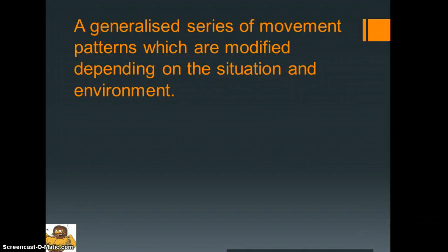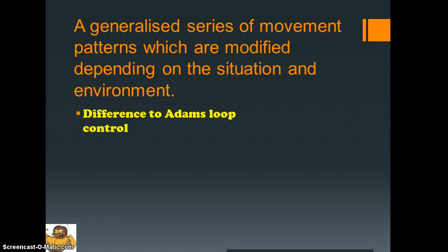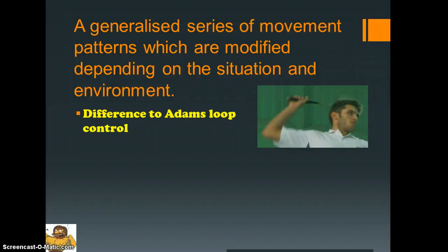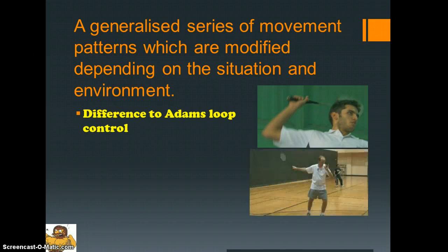In essence, a schema is a generalized series of movement patterns which are modified depending on the situation and environment. This is very different to Adams's loop control because schema is based on the idea that motor programs are not stored as separate items as presented by the open loop theory. Instead, they're retained in long-term memory as relationships with motor programs — termed generalized movements — which allow the performer to adapt quickly in response to a situation.